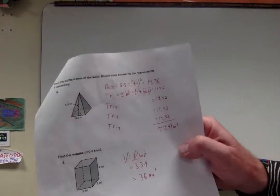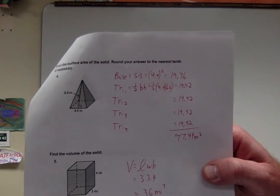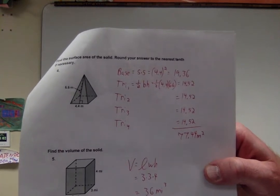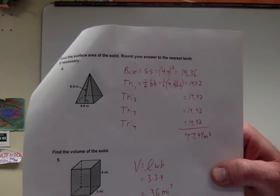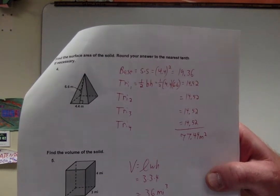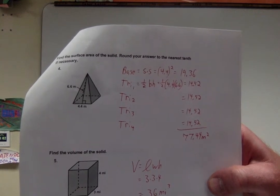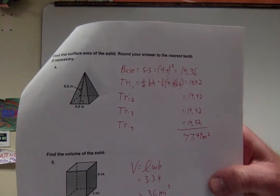Moving right along, everybody. We had to find, for number 4, it looks like we had to find the surface area of this pyramid. It looks like a square pyramid. So I found the area of the base, side times side. Then I found the area of a triangle. And I added that up four times, since there's four of them. I got an answer of 77.44 meters squared.